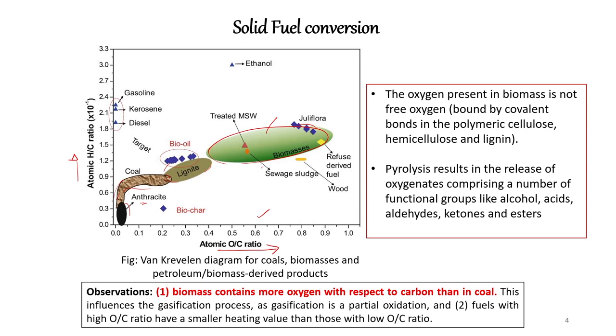In case of biomass, the oxygen present is not free and is bonded by covalent bonds in the polymeric cellulose, hemicellulose and lignin. Pyrolysis results in the release of oxygenates comprising a number of functional groups like alcohol, acids, aldehydes, ketones and esters. This plot allows us to characterize our fuel and determine to what extent we can improve its quality, also providing comparison with respect to coals and other biofuels.